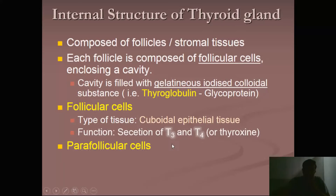Follicular cells are involved in synthesis and secretion of T3 and T4. Why is it called T3? Because there are three iodide molecules — that is why it is called triiodothyronine. Similarly, in case of T4, there are four molecules of iodide — that is why it is called tetraiodothyronine, or also thyroxine. Thyroxine is majorly preserved in levo form, which is why it is called levothyroxine or L-thyroxine, which is very widely used in the treatment of hypothyroidism.